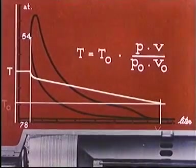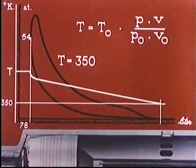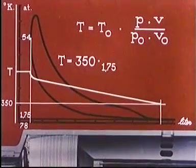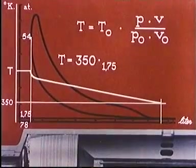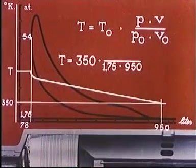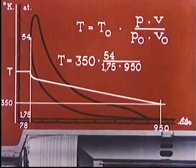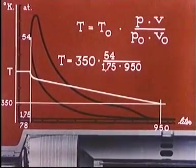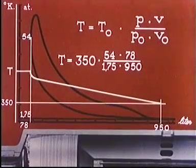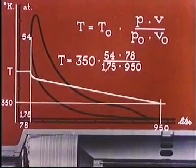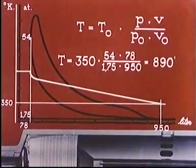Substituting the initial temperature, 350 degrees Kelvin, the initial pressure, 1.75 kilograms per square centimeter, the initial volume, 950 liters, the pressure in top position, 54 kilograms per square centimeter, and the compression volume, 78 liters, we find the temperature to be 890 degrees Kelvin.